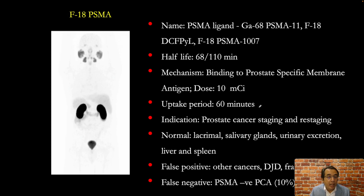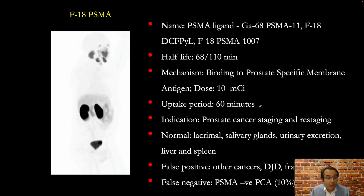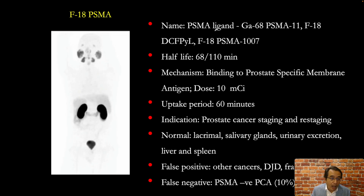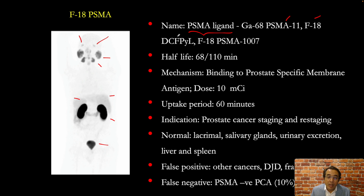The next PET scan we are going to review is F18 PSMA — it can also be performed using gallium-68. Here is a normal distribution of the tracer showing characteristic uptake in the lacrimal glands bilaterally, followed by the salivary glands, faint uptake in the liver and spleen, and excretion from the kidneys into the bladder. PSMA ligand options include gallium-68 PSMA-11, F18 DCFPyL, and F18 PSMA-1007. The half-life of gallium-68 is 68 minutes; the half-life of F18 is 110 minutes.